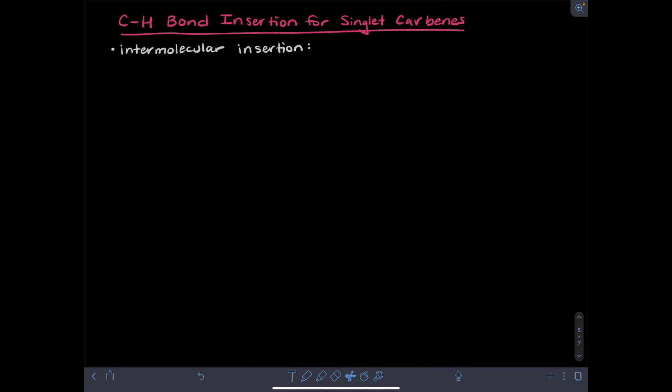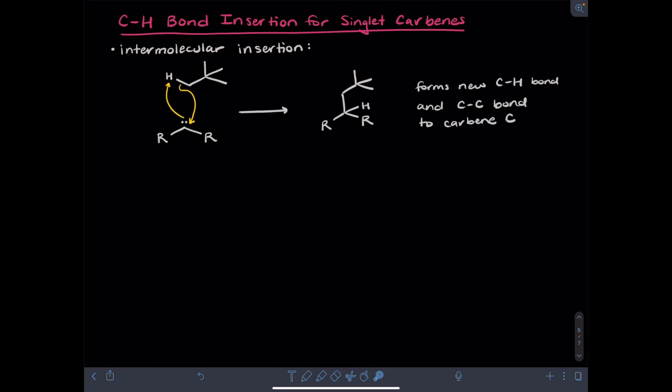Another type of carbene reaction is CH bond insertion, where the carbon of the carbene will form a new bond to a carbon and a new bond to a hydrogen. For singlet carbenes, there is a lone pair present on the carbene that forms the new bond to the hydrogen of the CH bond. In a concerted mechanism, I would bring the carbene lone pair to the proton and take the electrons from the CH bond and bring them to the carbene center. After the CH bond insertion, the carbon that was formerly the carbene has a new bond to a hydrogen and a bond to the carbon that the hydrogen was previously attached to.